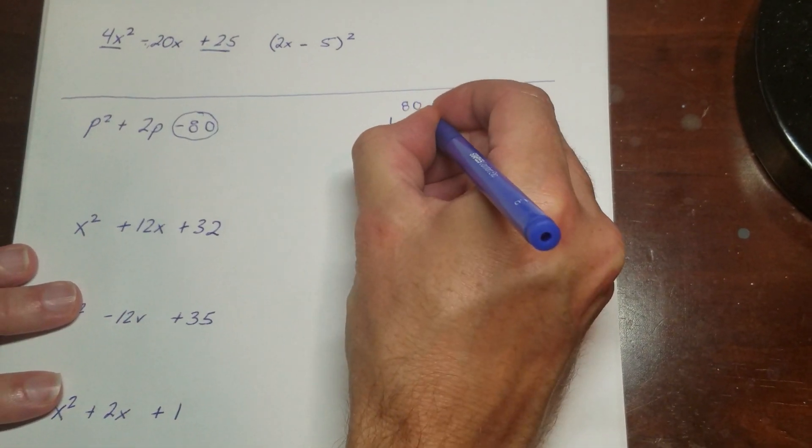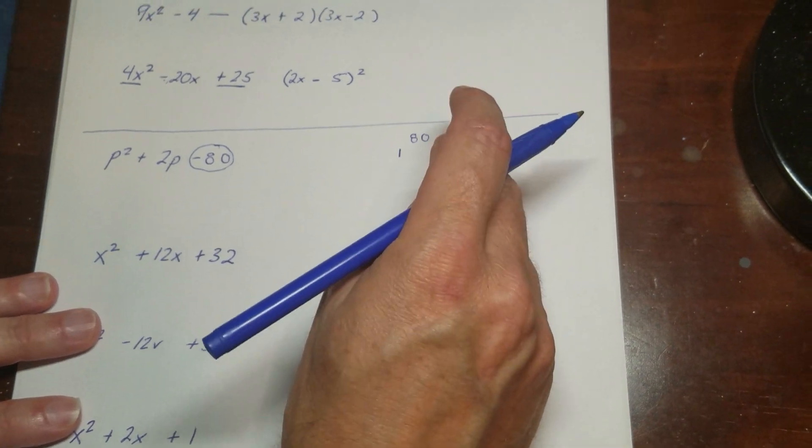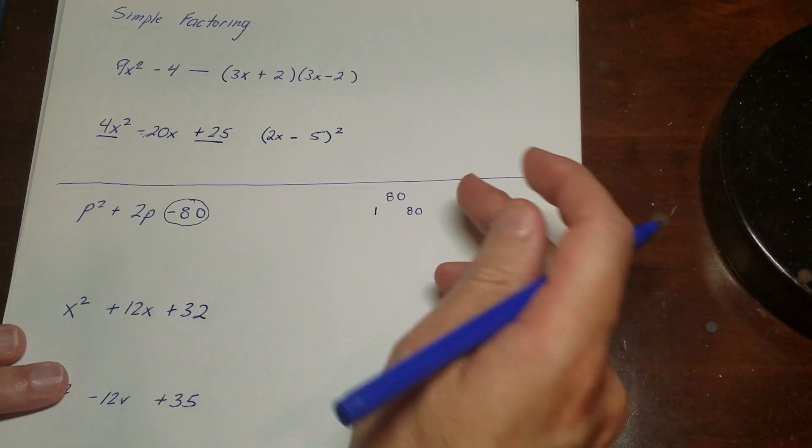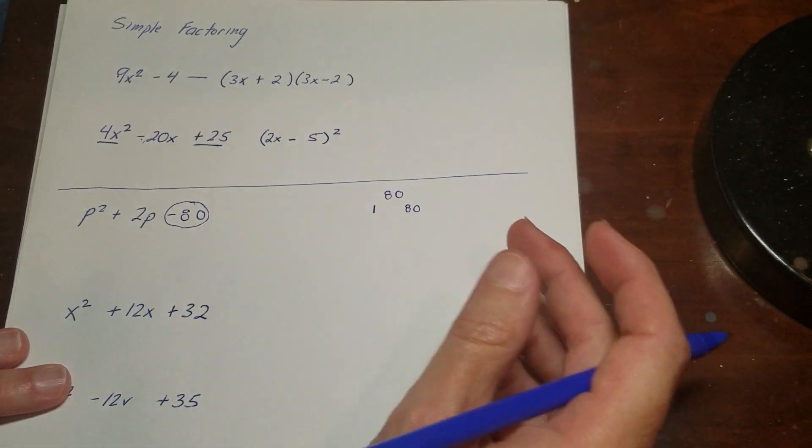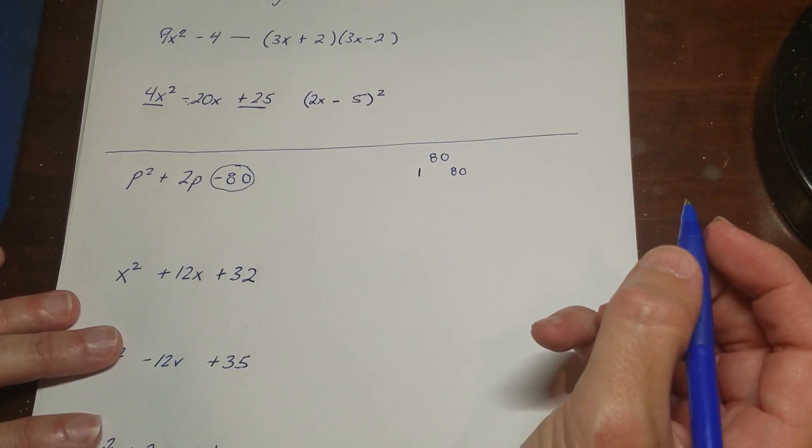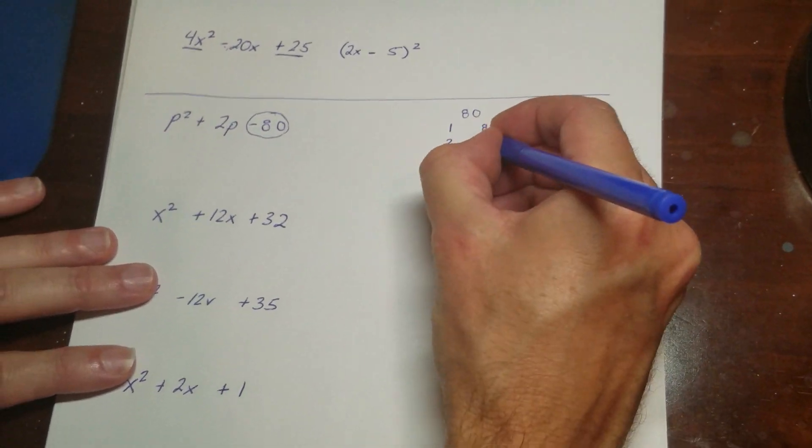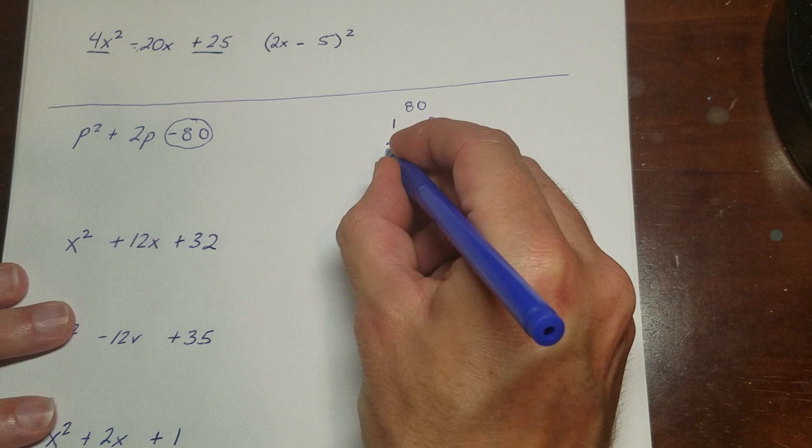You're going to put 1 and 80. You always start with 1 and the number because 1 goes into everything. And then you start counting up. So what comes after 1 is 2. Does 2 go into 80? Yes, it does. 2 goes in 40 times. Does 3 go into 80? Nope.